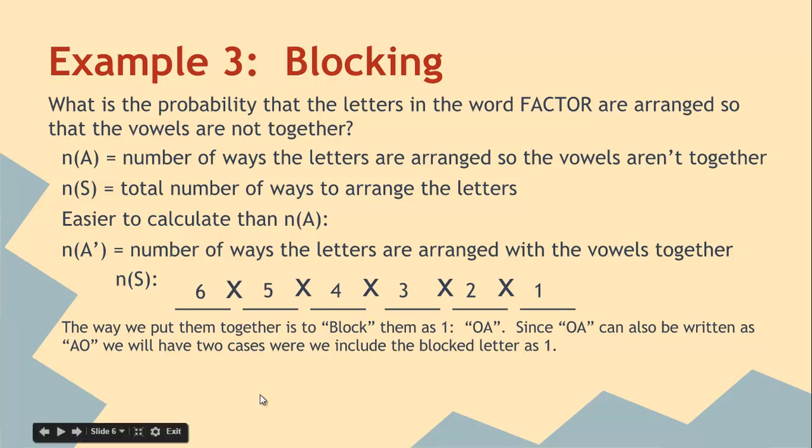So we actually don't have a six letter word anymore. We have a five letter word, and one of those letters is a blocked letter. So the number of ways to put them together is out of the five slots, there's five for the first, four for the second, three for the third, two, and then one. And then there's two cases for that to happen.